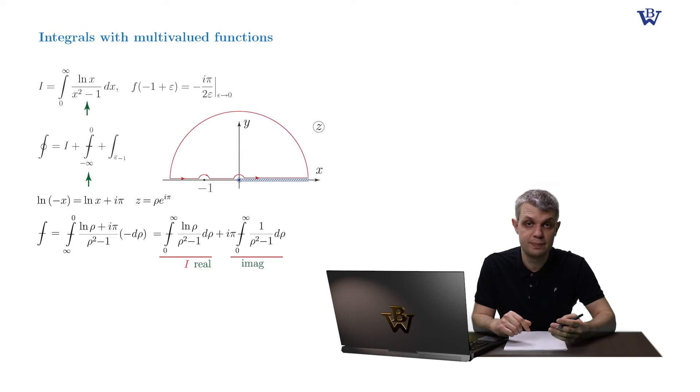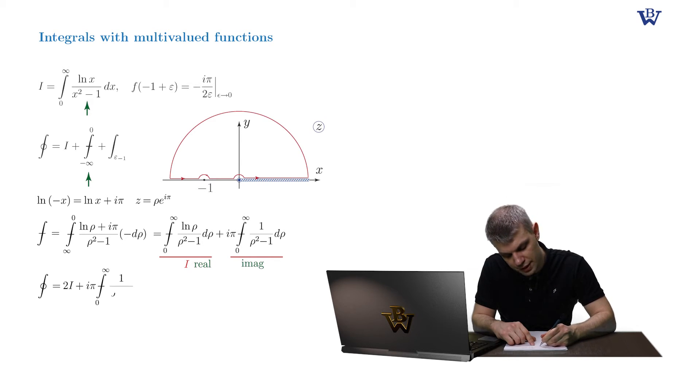So our goal is partially achieved. Our closed contour integral is now equal to double the original integral plus iπ times the principal value integral from zero to plus infinity dρ over ρ squared minus one, plus the integral along the upper semicircle around point negative one.